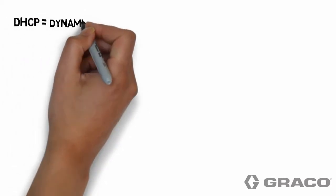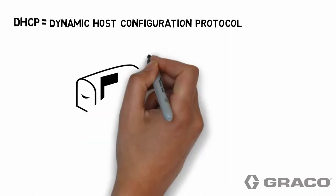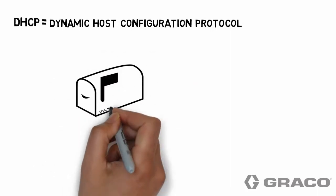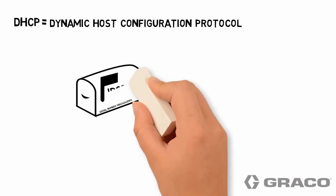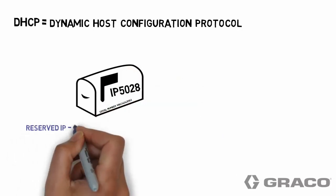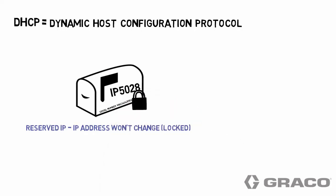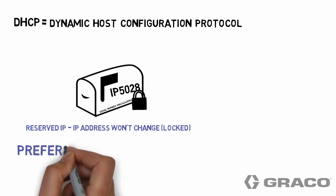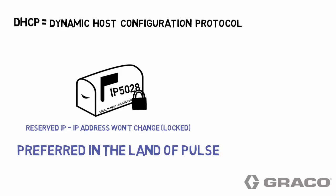Here's another acronym that relates to protocol. A DHCP, or Dynamic Host Configuration Protocol, is a common network configuration that allows the network to automatically assign IP addresses to devices as needed. In this configuration, IP addresses can change over time. But there is a preferred method for the land of Pulse called Reserved IP, in which DHCP networks assign a specific IP address to a specific MAC address. This method is intended to prevent the IP address from changing for select equipment.